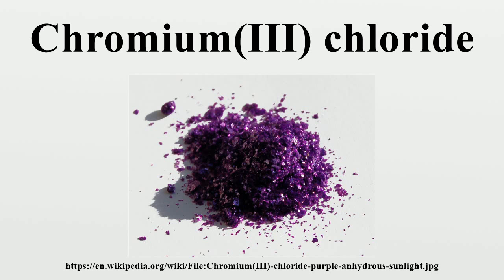Anhydrous chromium chloride may be prepared by chlorination of chromium metal directly, or indirectly by carbothermic chlorination of chromium oxide at 650 to 800 degrees Celsius: Cr2O3 + 3C + 3Cl2 → 2CrCl3 + 3CO. It may also be prepared by treating the hexahydrate with thionyl chloride.